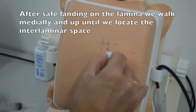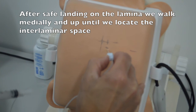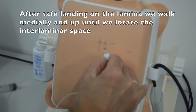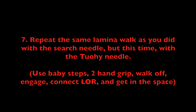After safe landing on the lamina, walk medially and up until you locate the interlaminar space. Step 7: Repeat the same lamina walk as you did with the search needle, but this time with the Tuohy needle. Use baby steps, two-hand grip, walk off, engage, connect loss of resistance, and get into the space.